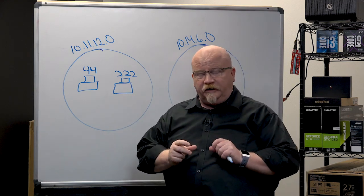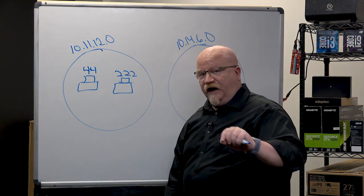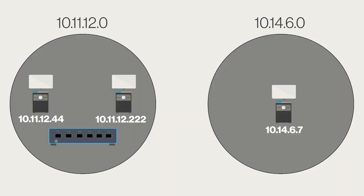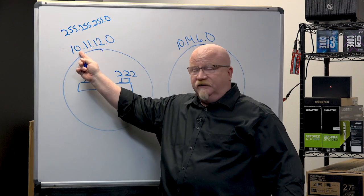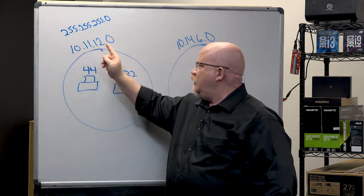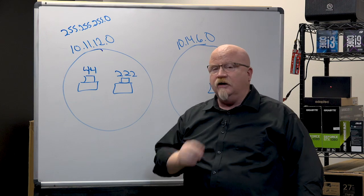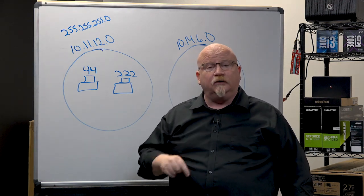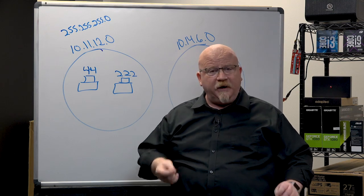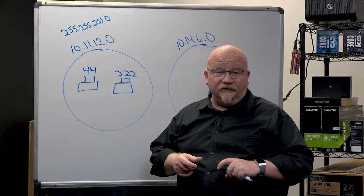Let's get some communication going. If computer 10.11.12.44 wants to talk to 10.11.12.222, it takes a look at the destination IP address and compares it to something called a subnet mask — another value you have to enter into your computer. A subnet mask usually looks like this: 255.255.255.0. Wherever you see 255, the numbers must be the same; wherever you see 0, the numbers can be different. Comparing these two addresses, they're both 10.11.12 — only the last digit differs. So the computer knows that other address is on its local area network.